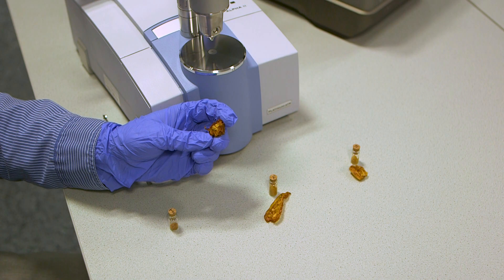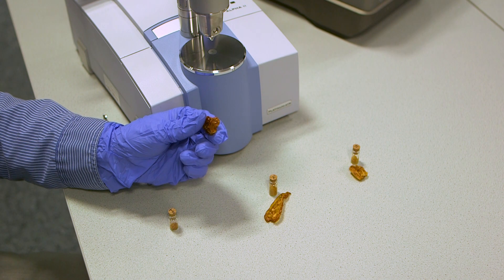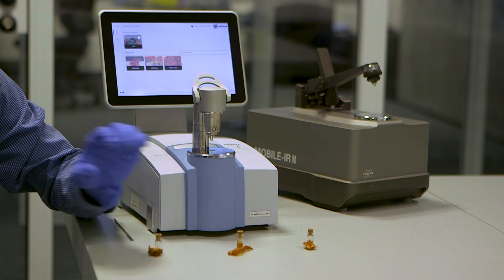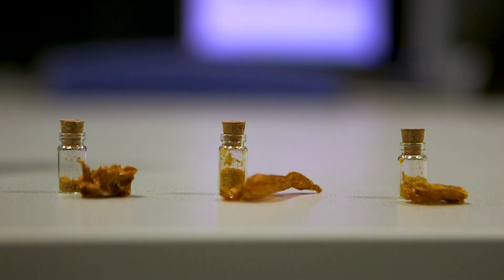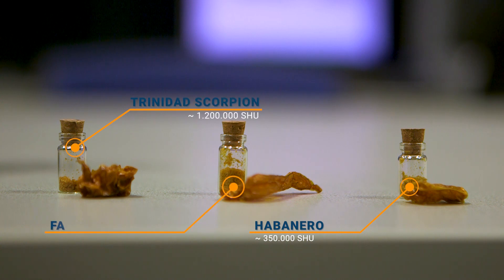In this video, we will analyze dried ground chilis to quantify the capsaicin contained and report it in estimated Scoville heat units. For this we prepared three chilis: a habanero, a trinidad scorpion, and a fatally yellow.